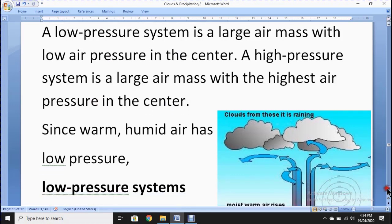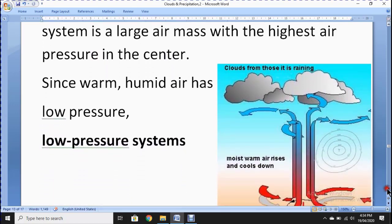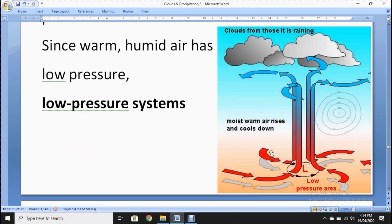Let's see with the help of this diagram to understand what is low pressure system. Since warm humid air has low pressure, low pressure systems form. Here you can see that this cloud forms and it is raining. You can see air moves in this way and here it causes or makes a low pressure and all air coming inside and it goes upward. This L represents low. Moist warm air rises and cools down.